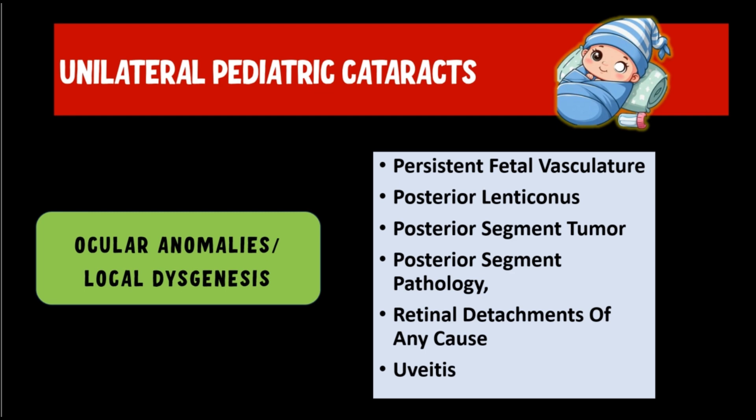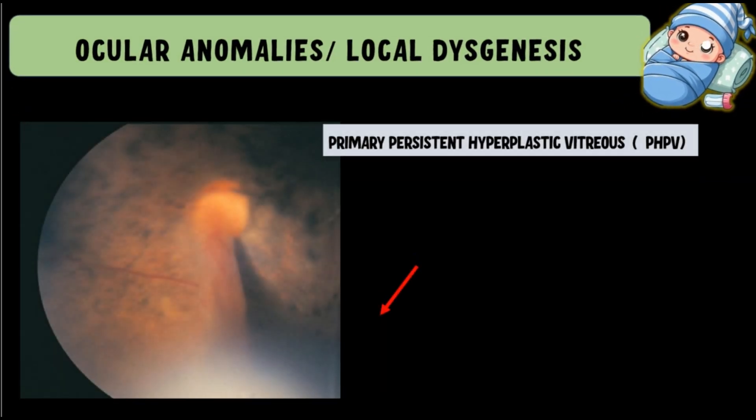If the uveitis is unilateral it will cause a unilateral pediatric cataract, but sometimes uveitis or inflammation of the choroid can be present in both eyes, in which case we will have a bilateral pediatric cataract. The first condition we will discuss is primary persistent hyperplastic vitreous, abbreviated as PHPV.